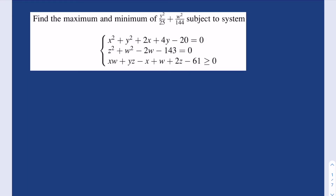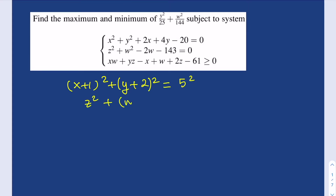The first equation can be written as (x+1)² + (y+2)² = 5² = 25, if you go ahead and complete the squares. The second equation can be written as z² + (w−1)² = 144, because you add 1 to both sides, and you can write that as 12².